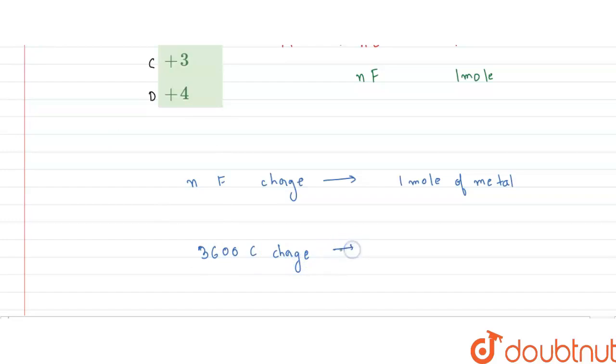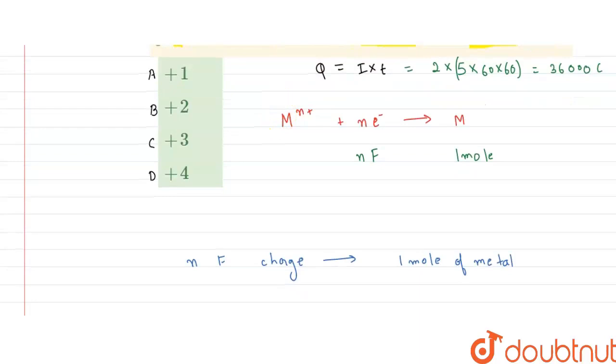So we can use unitary method over here. We know that n faraday of charge is giving one mole of metal, so 36,000 coulomb of charge will give me one mole upon n faraday into 36,000. One mole is actually equal to the atomic weight of the metal, which also has been given to us as 177, so let me write this will be